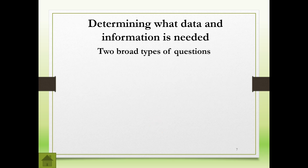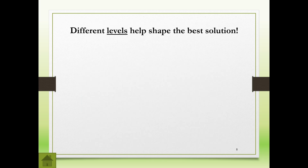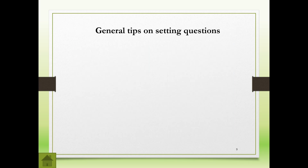We need to determine what type of data is needed, and to do that we ask two types of questions. The first is your closed question, where you answer with facts - like what, where, when, who. Your open-ended question requires a bit more, like why are you doing this, why have you chosen this particular subject, how are you going to gather information, or what if something happens. There are also different levels: your closed question gives lower-level questions which are facts only, while open-ended is a higher-level question because more judgment is needed. For those doing the PAT, you have to structure those questions in relation to the different levels as well.